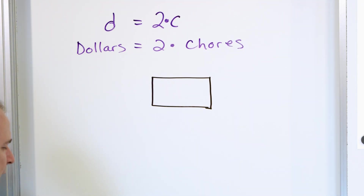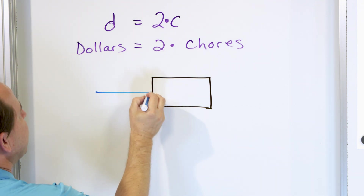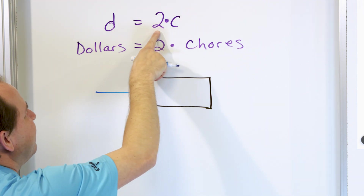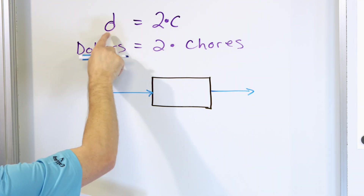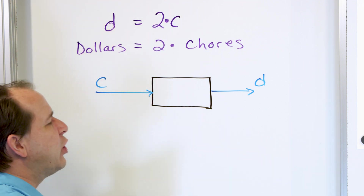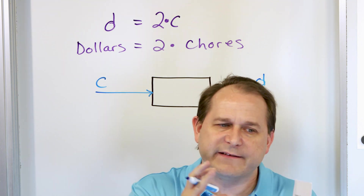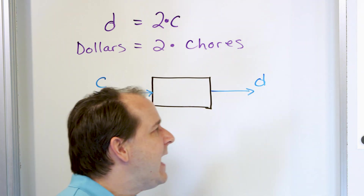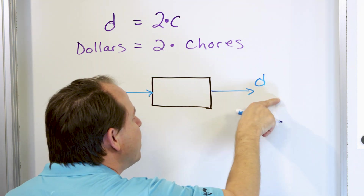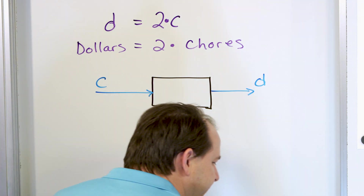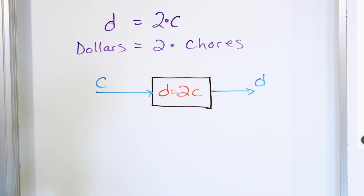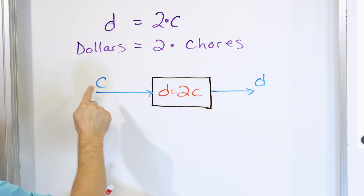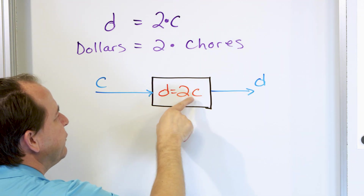If this box is going to calculate something, what do we feed into the box? We look at our equation. We tell it how many chores we've done, multiply by two, and the result is the number of dollars we earn. What goes into the box? It's C, the number of chores. What's the output? It's how many dollars I earned. So if I put one chore in, two times one — two dollars come out. If I put five chores in, two times five — ten dollars come out.